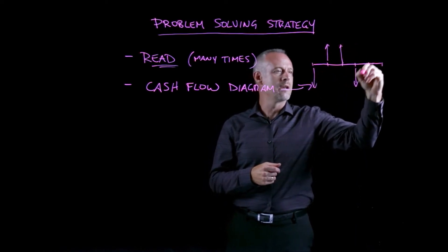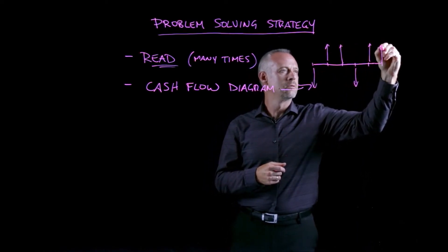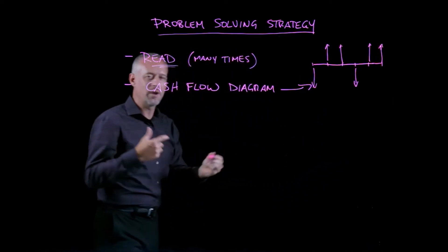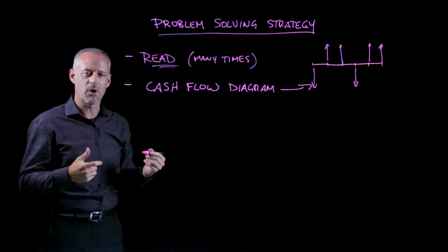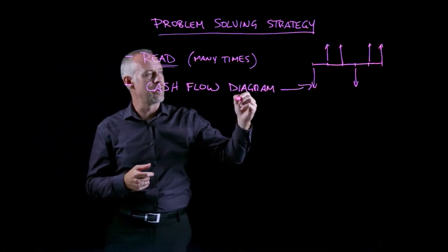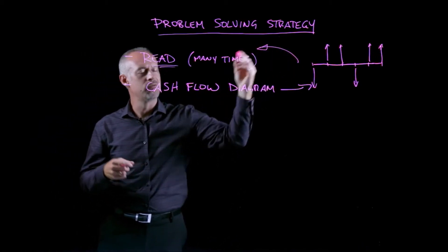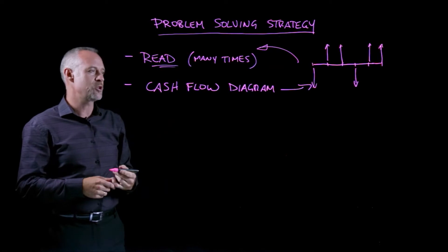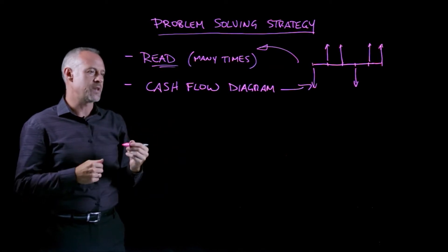And if you remember from the introduction to the course, really this is about making a model, a simplified model, of what's happening in the engineering economics problem. So, a cash flow diagram, or trying to draw a cash flow diagram, kind of comes out of your interpretation of the question. So that's the second step.